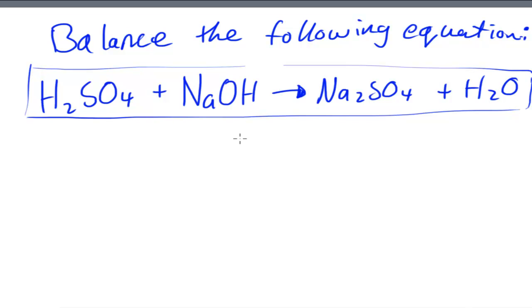In this video I'm going to work through an example of balancing a chemical equation. The question says balance the following equation: H2SO4 (sulfuric acid) plus NaOH produces Na2SO4 plus H2O.